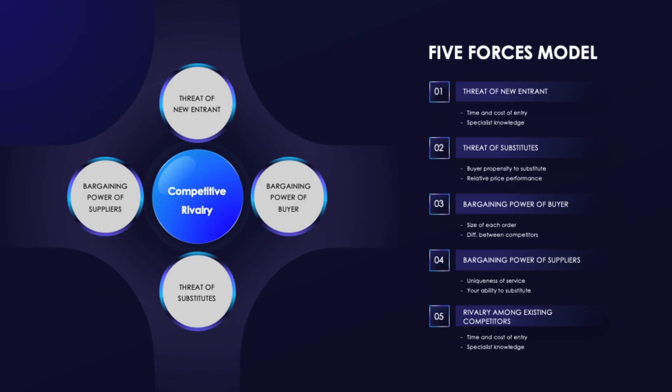Industry rivalry looks at the intensity of competition among existing firms in the industry. Factors influencing rivalry include the number of competitors, the rate of industry growth, product differentiation, and switching costs for customers. High rivalry can lead to price wars, increased marketing costs, and reduced profitability. Understanding these forces helps businesses assess their industry structure, identify areas of strength and weakness, and develop strategies to achieve a competitive advantage. By leveraging insights from the five forces model, companies can better navigate their market landscape and make informed strategic decisions.